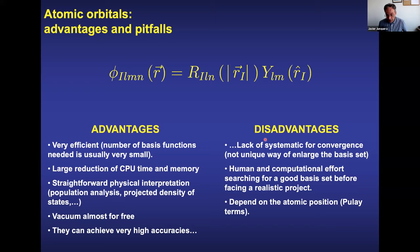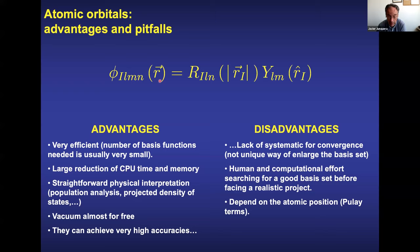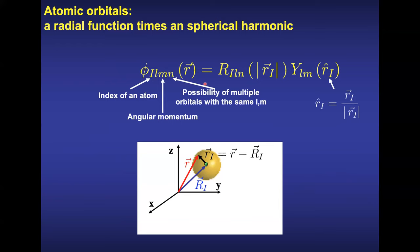The lack of systematic convergence means there is not a unique way to improve the quality of the basis set, requiring human and computational effort to find a good basis before starting a project — similar to the pseudopotential transferability problem. On top of the pseudopotential, one must also take care of the basis set. Another disadvantage is that these basis functions depend on atomic positions, meaning Pulay corrections must sometimes be implemented, which are not always easy.